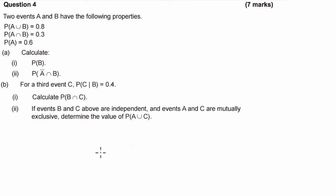G'day guys, we've got a probability question here for you today where we have two events, A and B, with the following properties. The probability of A union B, or A or B, is 0.8. The probability of A and B is 0.3, and the probability of A is 0.6.